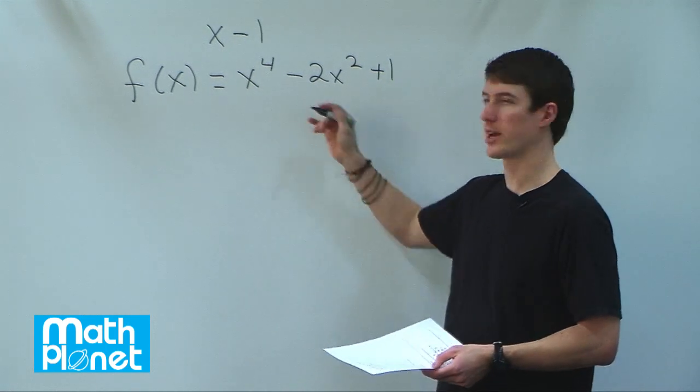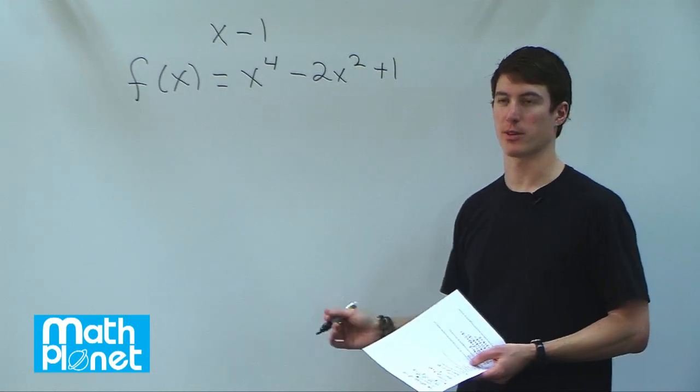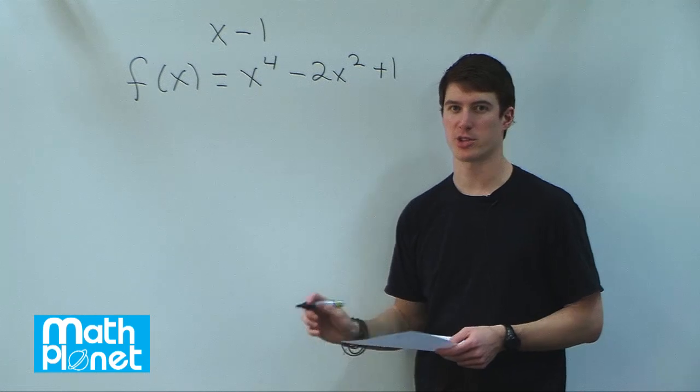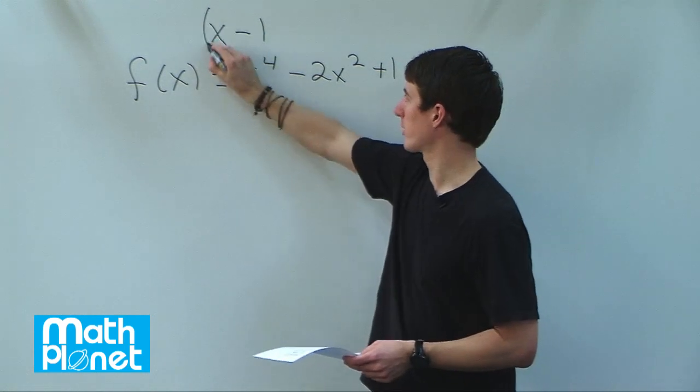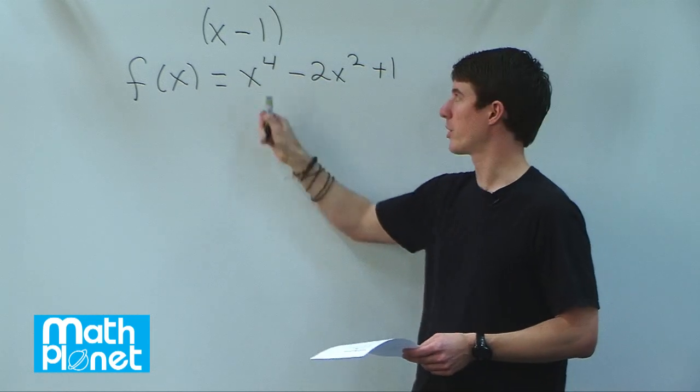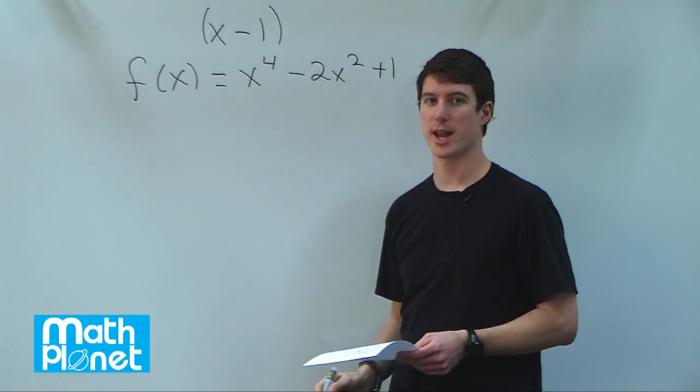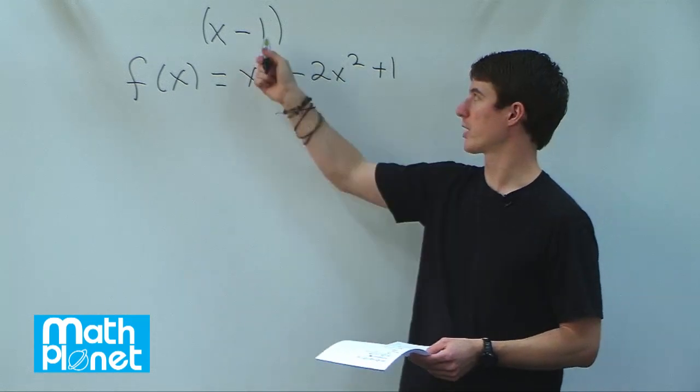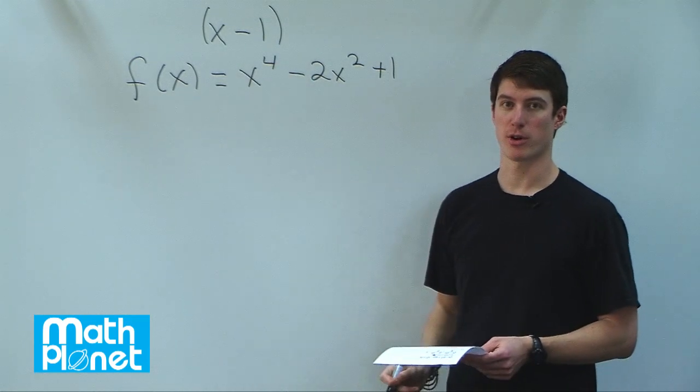Instead of using polynomial division, we can do a quite simple and elegant check. We know that if this expression is a factor, then when we plug in and evaluate at x equals 1, we'll get 0 for our function.